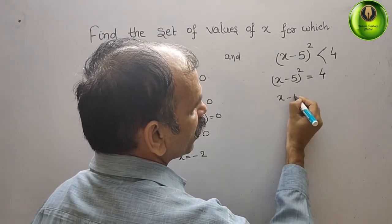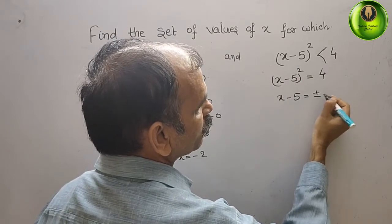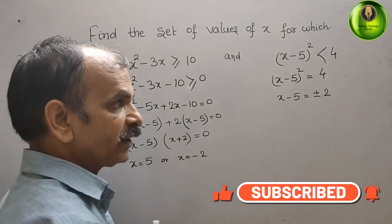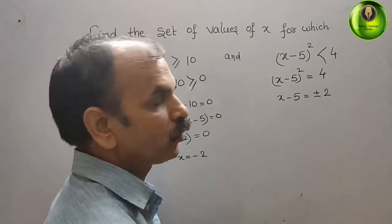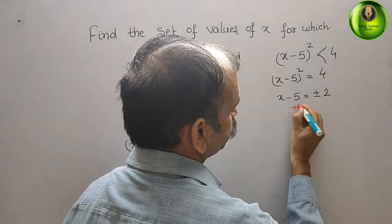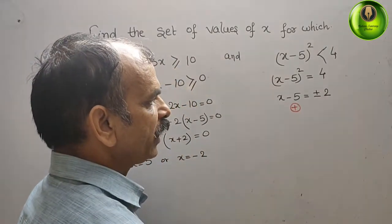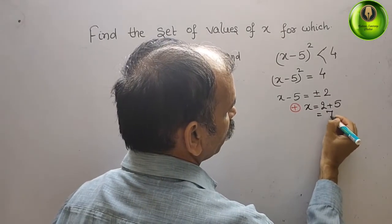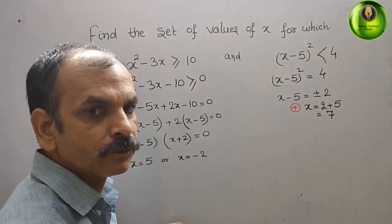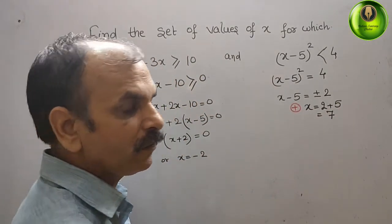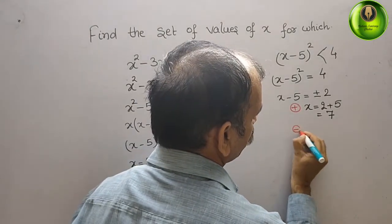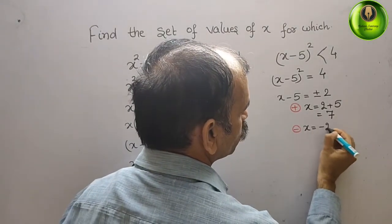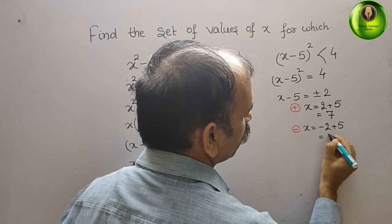So x minus 5 equals plus or minus the square root of 4, which is 2. Taking the positive case: x equals 2 plus 5, which equals 7. Taking the negative case: x equals minus 2 plus 5, which equals 3.